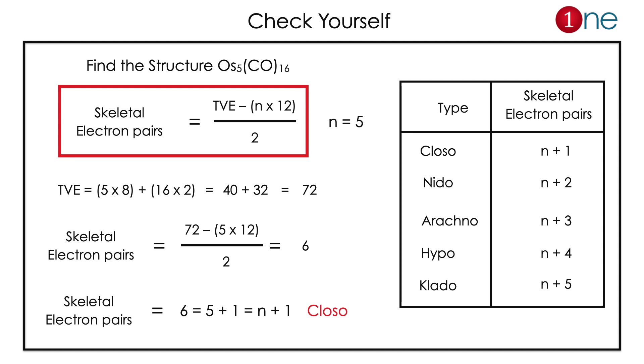So skeletal electron pairs are 72 minus 60 divided by 2, which is 12 by 2 equals 6. Here you have 6 skeletal pairs which is 5 plus 1, where 5 is metal. So the structure will be n+1 which is closo structure. It is that easy.